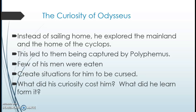I'm going to use the curiosity of Odysseus, which is seen very clearly in the Cyclops episode of the Odyssey. Instead of sailing home, he decided to explore the mainland and the home of the Cyclops. As a result, this led him and his men to being captured by Polyphemus — a few of his men lost their lives, they were eaten — and it also created another series of events. Being captured prevented him from his goal, which is to return home with all of his men.